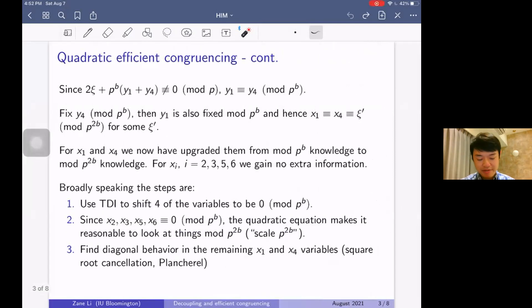Then this implies that y_1 must be y_4 mod p^b. So if y_4 was something mod p^b, then y_1 is also fixed mod p^b. Then we know that x_1 is congruent to x_4 mod p^{2b}. In other words, we've upgraded x_1 and x_4 from knowing what they look like mod p^b to what they look like mod p^{2b}. As for the x_2, x_3, x_5, x_6 variables, we gain no extra information.